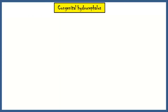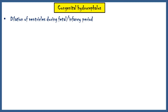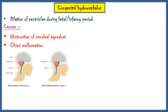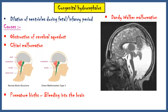Congenital hydrocephalus refers to dilation of ventricles during the fetal or infancy period. Causes include obstruction of the cerebral aqueduct; Chiari malformation, in which a part of the brain extends into the spinal canal due to an abnormality of the skull; premature births, which cause bleeding into the brain and disrupt CSF flow; and Dandy-Walker malformation, a rare condition characterized by agenesis of the cerebellum and cystic dilation of the fourth ventricle, leading to disruption of CSF flow.